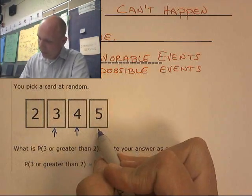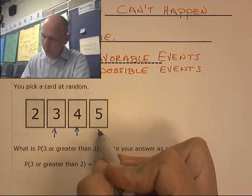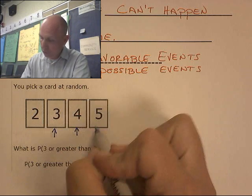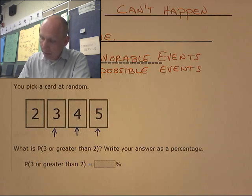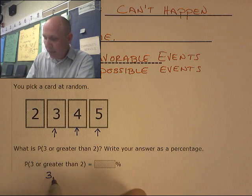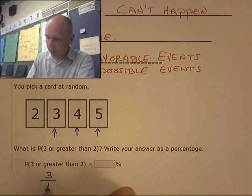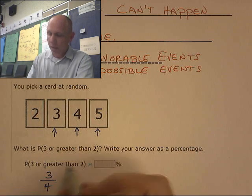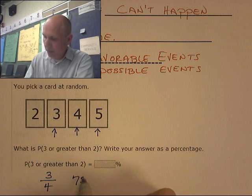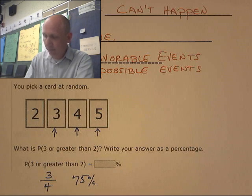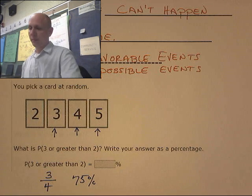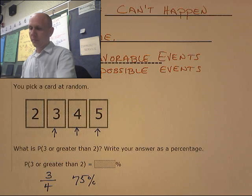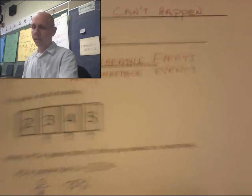How about a 5? A 5 is not a 3, but it's greater than 2. So I have 3 favorable outcomes out of 4 possible outcomes. My probability is 75%. So this would be an overlapping event.